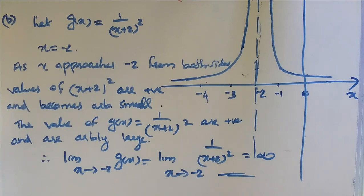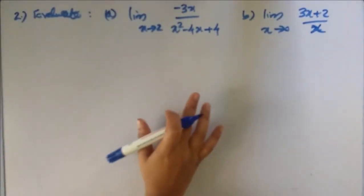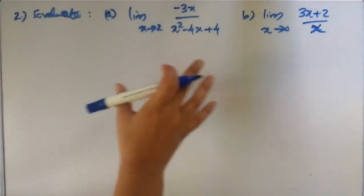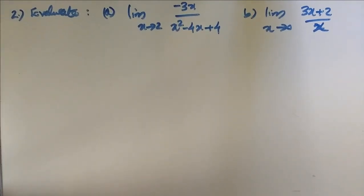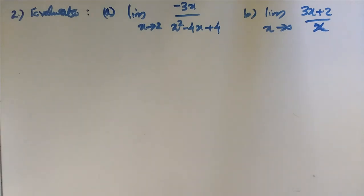We will do 3 problems involving infinite limits. First: limit x tends to 2 of minus 3x divided by x² minus 4x plus 4. Second: limit x tends to 0 of 3x plus 2 by x.